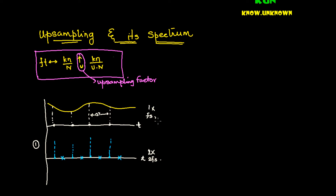I have 4 samples originally. If I am supposed to upsample by a factor of 2, I need to get 8 samples. The way to realize 8 samples in Step 1 is: the original samples remain as they are, and I stuff zeros in between. So these zero-stuffed positions have no value — they are all zeros — while the original samples retain their amplitude.